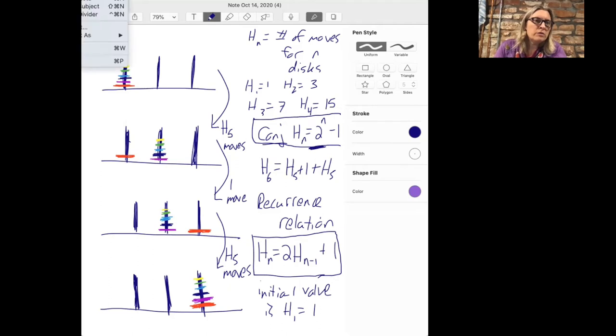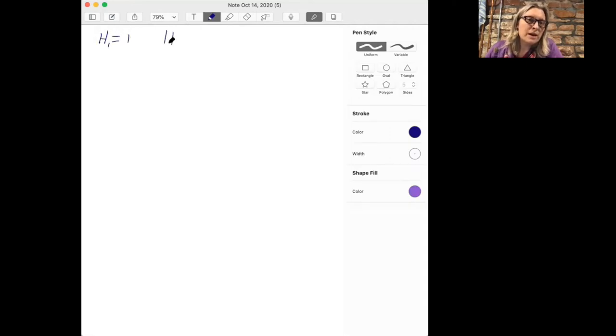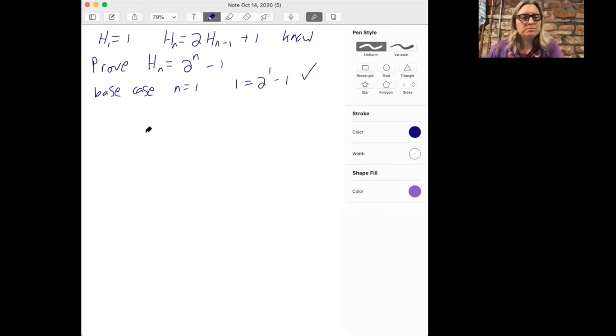So let's now use the initial value and the recurrence relation. So we know that h_1 is 1 and that h_n is 2h_(n-1) plus 1. Those are the things we know. And let's prove that h_n is 2 to the n minus 1. We're going to do this by induction. The base case when n equals 1, 1 does equal 2 to the 1 minus 1. So that's good. And now our inductive hypothesis is that h_(n-1) is 2 raised to the power n minus 1 minus 1.